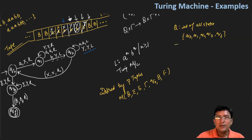And then the input alphabet — which we have as A's and B's.